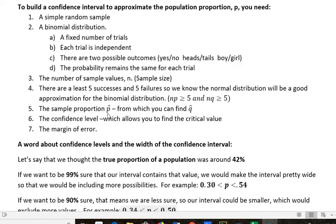The sample proportion, p hat, you need to know that. From that, you can find q hat by one minus p hat. You need the confidence level, which allows you to find the critical value, and you need the margin of error.